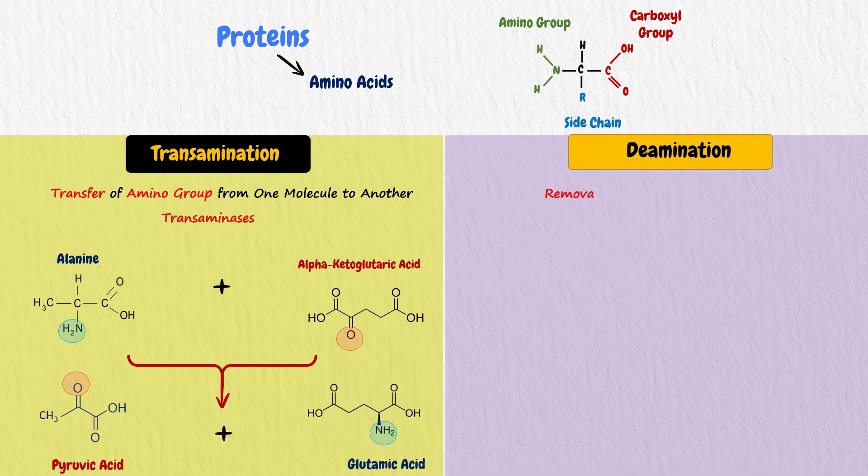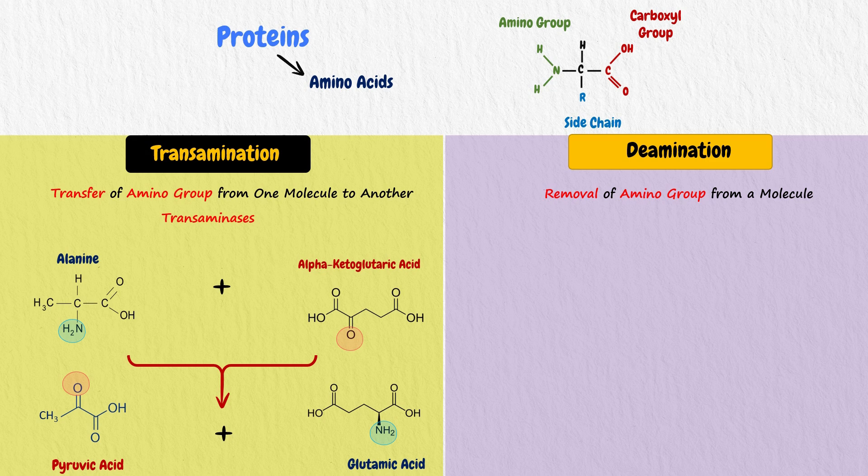Deamination is the removal of an amino group from a molecule. Enzymes that catalyze this reaction are called deaminases. For example, glutamate deaminated by oxidative deamination using enzyme called glutamate dehydrogenase to alpha-ketoglutarate.